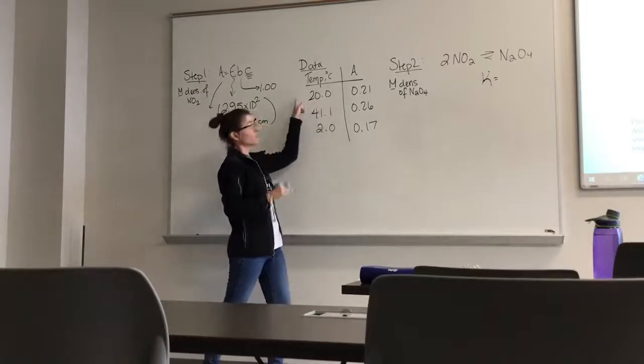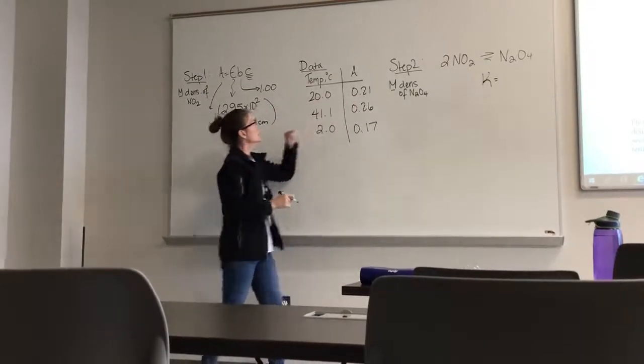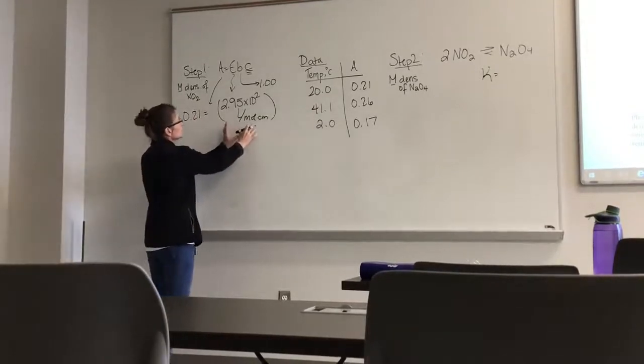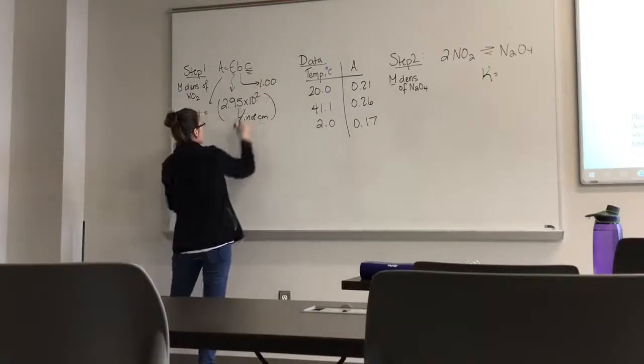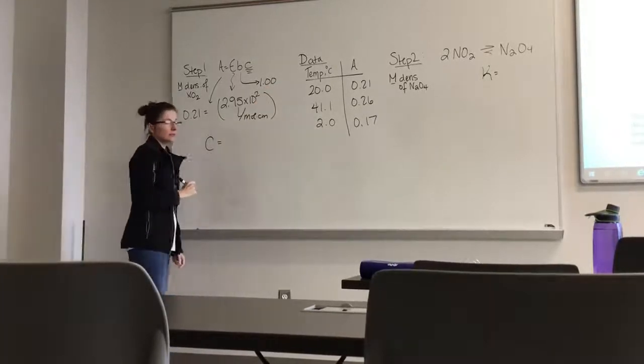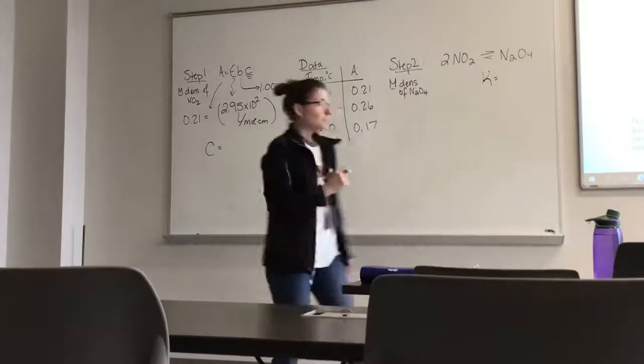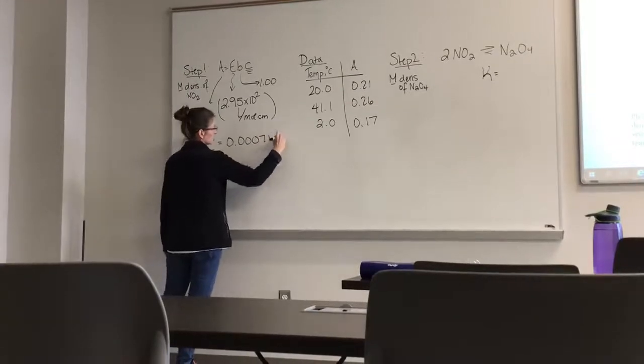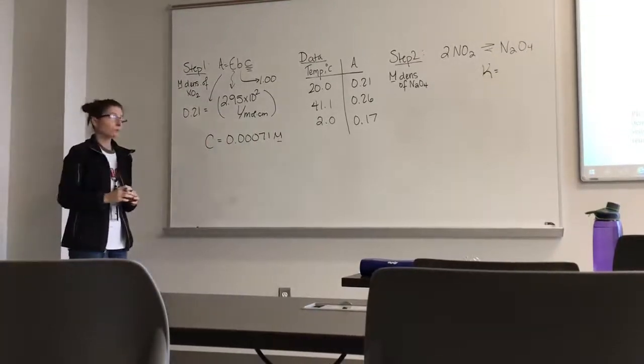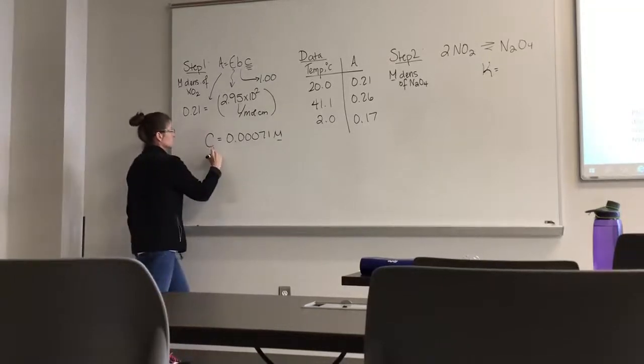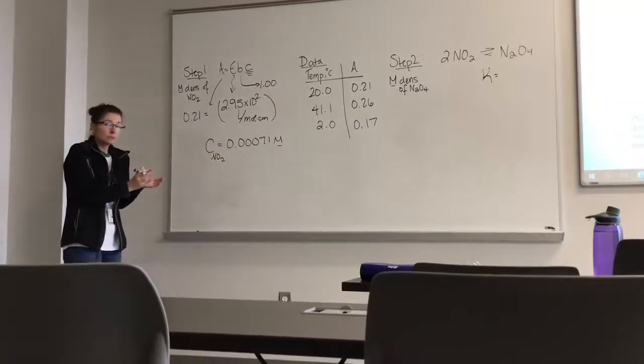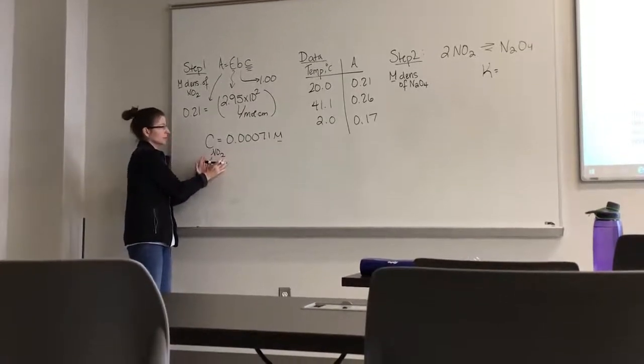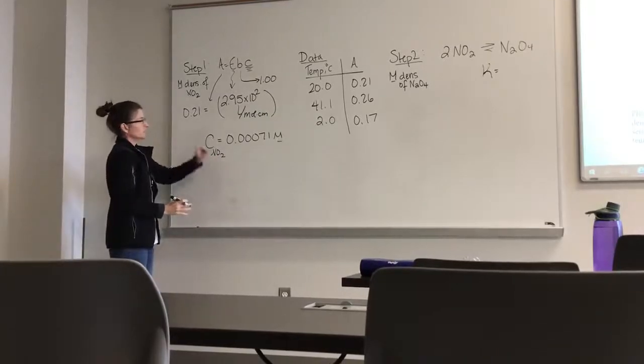And we already know what the absorbance is because it came from the data. Again, this will come from your data table, not mine. But for me at 20, the absorbance was equal to 0.21. So I have 0.21 is equal to the molar absorptivity times B, and I solve that for C. And C would give me my molar absorptivity. And for me, the molar density at room temperature was 0.00071 molar. And this is the molar density of NO2 because when we're taking the absorbance, it is measuring the absorbance of NO2, which is the red colored gas. So we have that molar density. Step one is done.